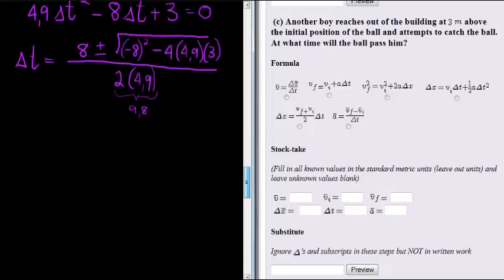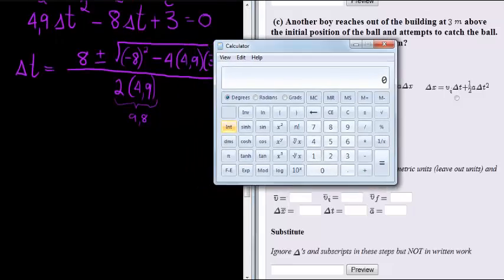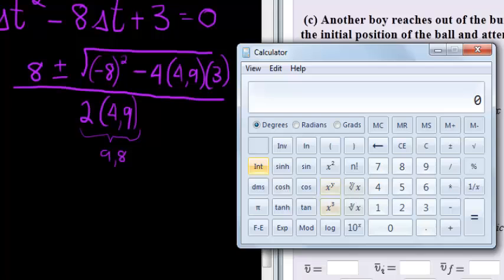Cool, now all I do is use my calculator to solve that. I first do the square root starting with the interior of eight. Negative that is squared, obviously this negative becomes positive and it's sixty four minus four times four point nine times three is equal to five point two. That is the interior of the square root. If I take the square root of that I get two point two eight and that I'm going to put into my memory by clicking memory store.